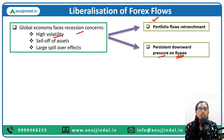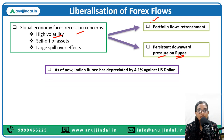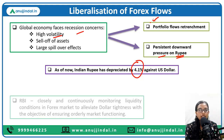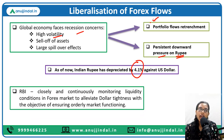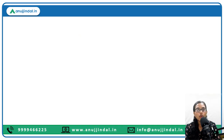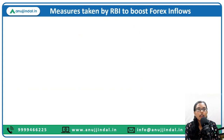If we talk about India, as of now our Indian rupee has depreciated by 4.1 percent against the US dollar. India is still strong and resilient enough to support its rupee; however, RBI has come up with several measures to support it in a much better way — to have more liquidity in the forex market so that any dollar tightness can be reduced, with the objective of ensuring orderly market functioning. RBI has closely monitored liquidity conditions and come up with the following measures to boost forex inflows and support the rupee.